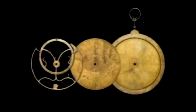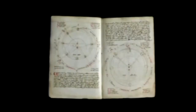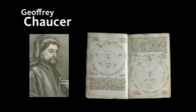If you were an educated child, you would know how to not only use the astrolabe, you would also know how to make one. We know this because the first treatise on the astrolabe — the first technical manual in the English language — was written by Geoffrey Chaucer, in 1391, for his 11-year-old son, little Lewis.